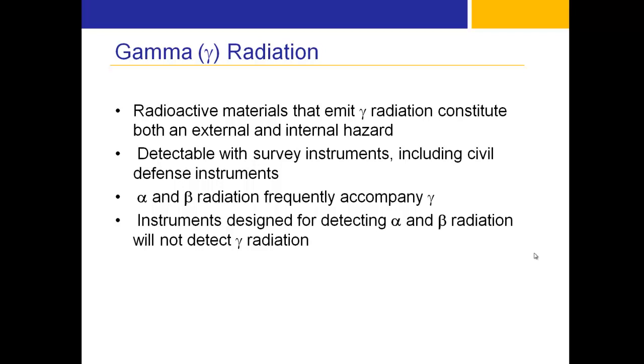Gamma emitters are detectable with survey instruments, including civil defense instruments. Alpha and beta radiation frequently accompany gamma; however, instruments designed for detecting alpha and beta will not detect gamma — you need separate detection instruments.